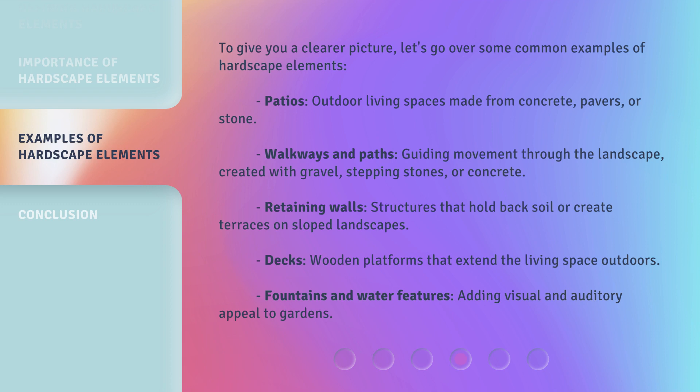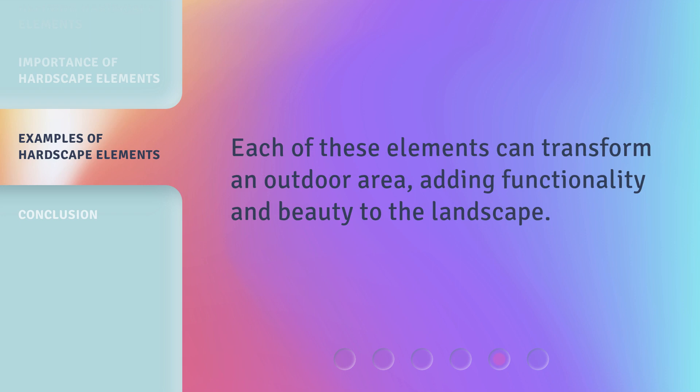Patios: outdoor living spaces made from concrete, pavers, or stone. Walkways and paths: guiding movement through the landscape, created with gravel, stepping stones, or concrete. Retaining walls: structures that hold back soil or create terraces on sloped landscapes. Decks: wooden platforms that extend the living space outdoors. Fountains and water features: adding visual and auditory appeal to gardens. Each of these elements can transform an outdoor area, adding functionality and beauty to the landscape.